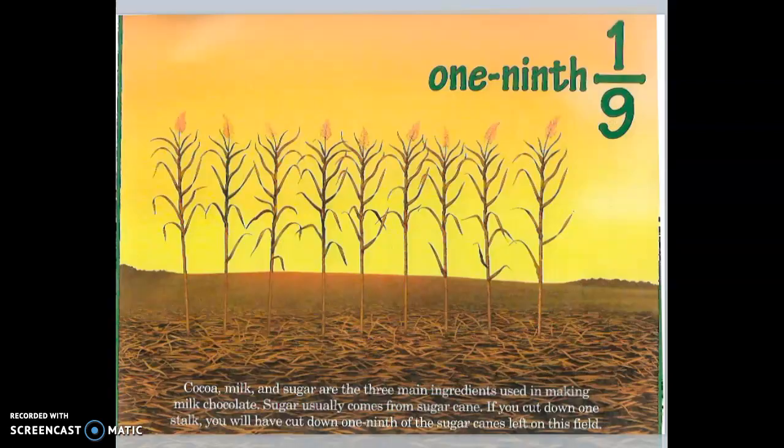One-ninth. Cocoa, milk, and sugar are the three main ingredients used in making milk chocolate. Sugar usually comes from sugar cane. One-ninth. If you cut down one stalk, you will have cut down one-ninth of the sugar canes left on this field.